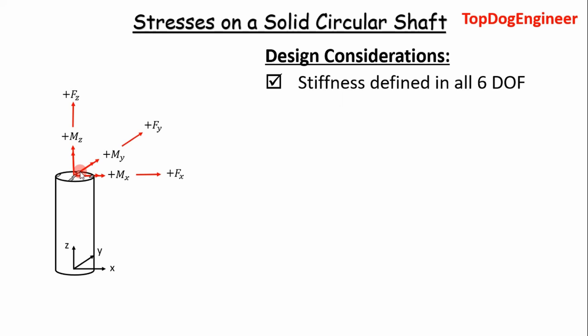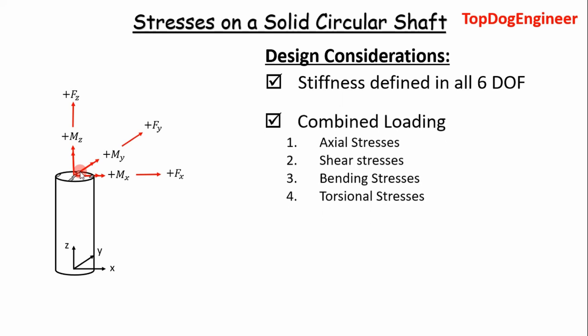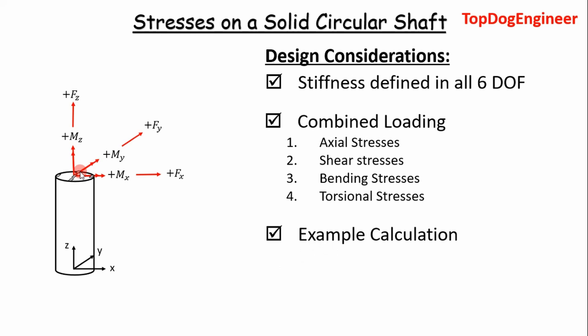This comes into play when the stiffness is defined in all six degrees of freedom. We're going to combine the loads — the axial loads, shear loads, bending loads, and torsional loads — and determine the max principal stress using Mohr's circle. Then we're going to perform an example calculation and show how to integrate it into our object-oriented program already created in Python. It should be pretty seamless since we got the legwork out of the way with the solid square shaft case.